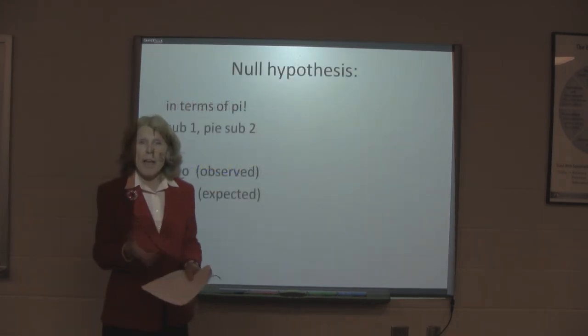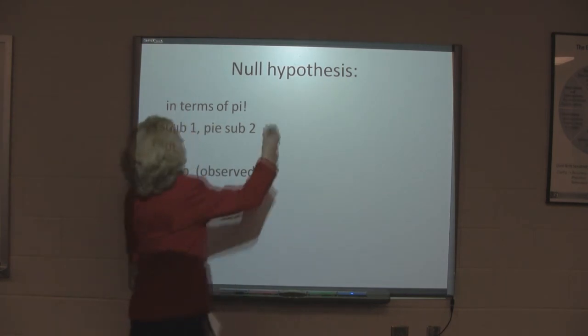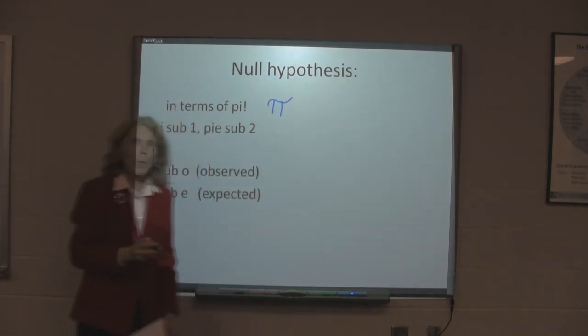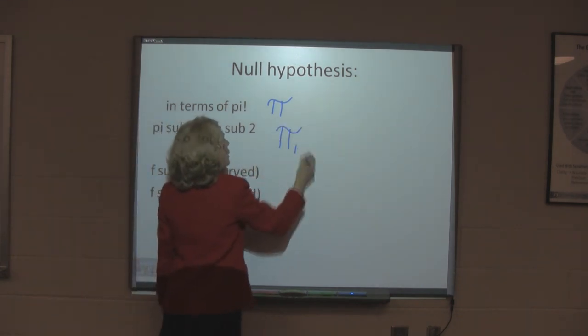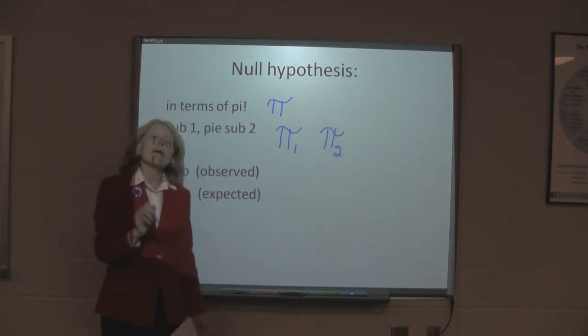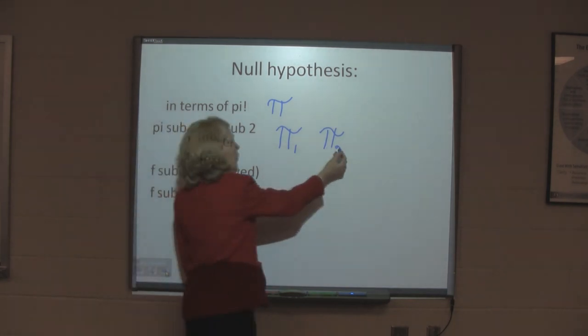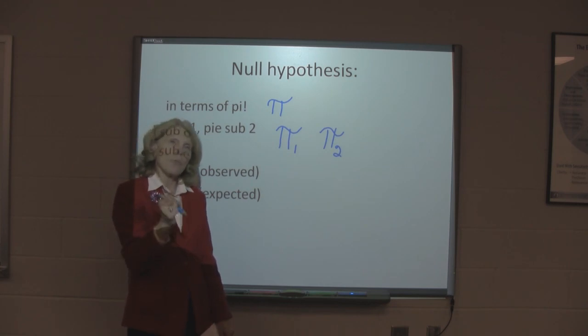Let's look at the null hypothesis for this test. We are going to state the null hypothesis in terms of pi, which is the Greek symbol for the proportion. We are going to have pi sub 1 and pi sub 2. Where pi sub 1 represents the proportion of females who are left handed out of the females. And pi sub 2 is the proportion of males who are left handed, again, out of just the males.